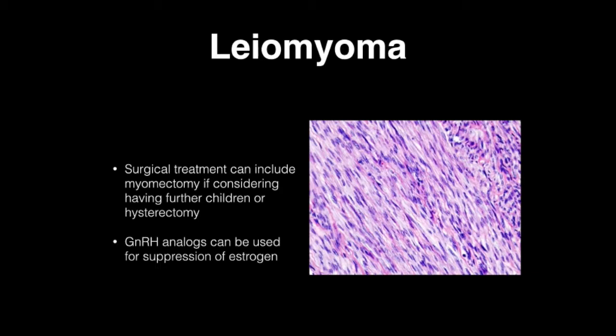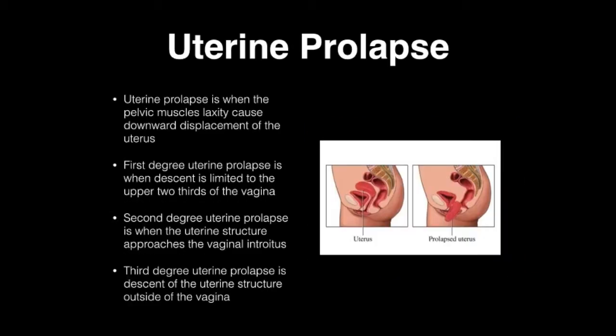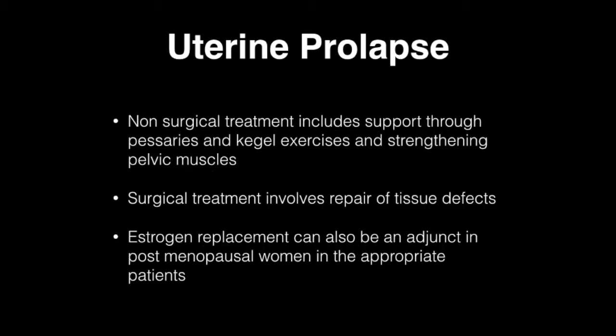The last topic under the uterus section is uterine prolapse, which is when pelvic muscle laxity causes downward displacement of the uterus. First degree is when descent is limited to the upper two-thirds of the vagina. Second degree is when the uterine structure approaches the vaginal introitus. Third degree is when the uterine structure is outside of the vagina. Non-surgical treatment includes supportive pessaries and Kegel exercises. Surgical treatment involves repair of tissue defects. Estrogen replacement can also be an adjunct for postmenopausal women in appropriate patients.